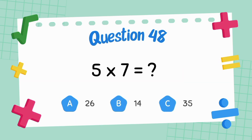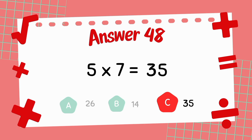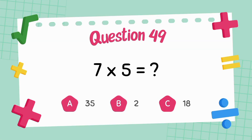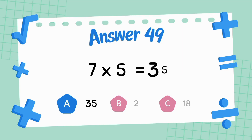What is five multiply seven? The answer is thirty-five. What is seven multiply five? The answer is thirty-five.